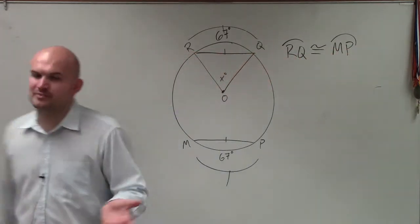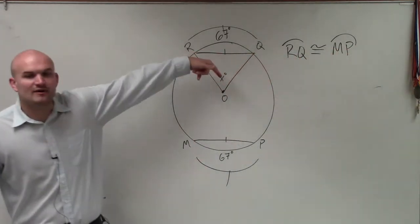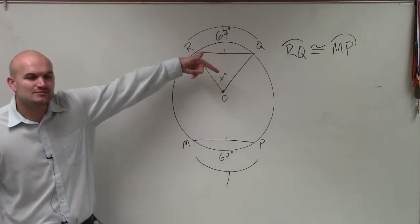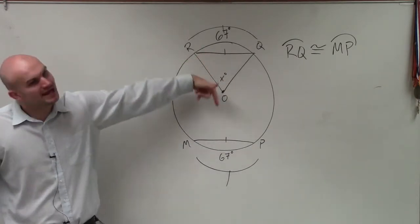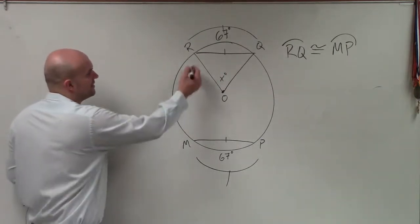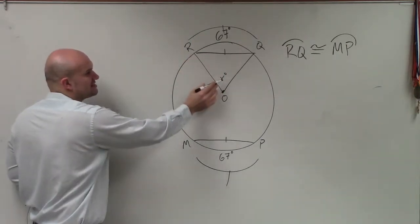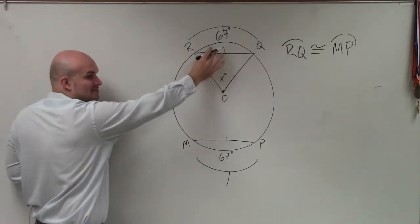Now, the reason why the triangle's up there is because that's what they're asking. They're asking for x. Now remember, what x represents is the central angle. And remember, when we were talking about over here, the central angle is the same as your arc measurement.